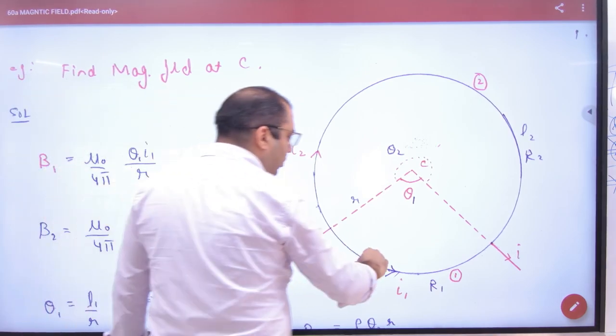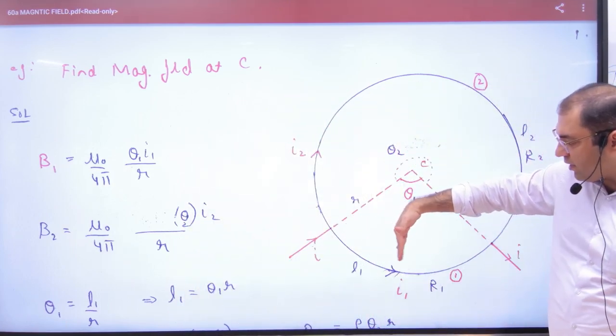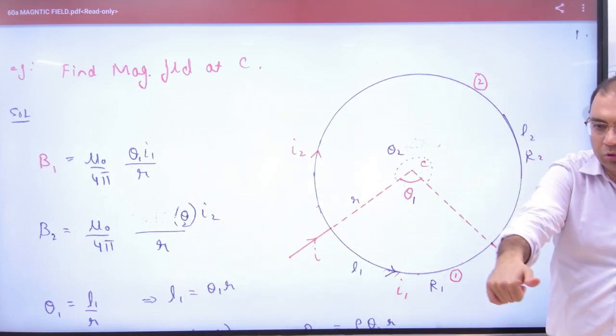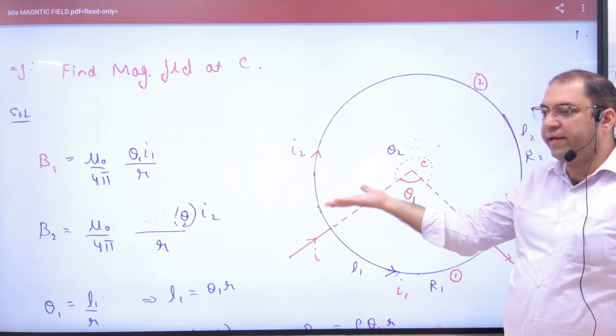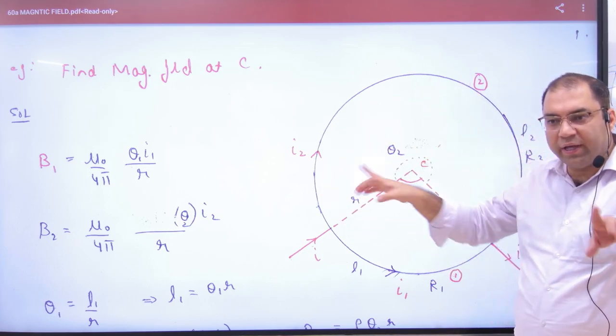Now, the current here, Biot-Savart law. Current is like R. How will it be? Out. In this current, how will it be? In. One out, one in.